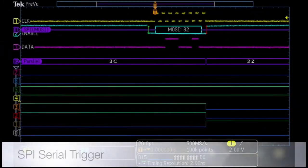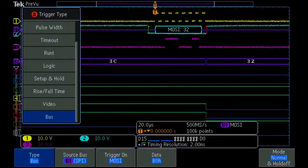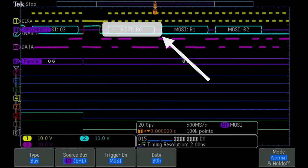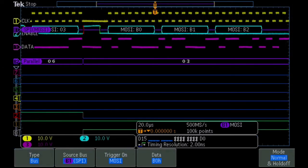You can program the serial trigger to capture specific events, such as every time the hex data value B0 is transmitted on the serial bus. The MDO3000 supports over 10 different serial protocols to match the needs of your design.